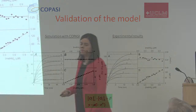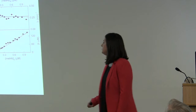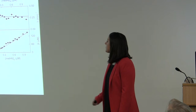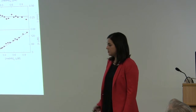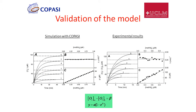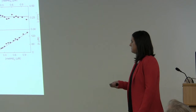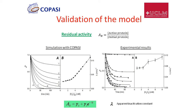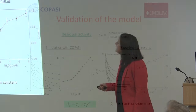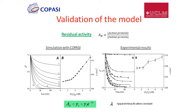The next step is the validation of the model. We performed the validation by doing experiments in the lab using the protein hemoglobin and comparing the results with the simulation. On the left you have the simulation results and on the right the experimental results. As you can see, in the oxygen evolution and some kinetic parameters we obtain similar results, demonstrating that the model describes the behavior of this protein well. The same happens with the residual activity, where we obtain similar behavior and the apparent inactivation constant.